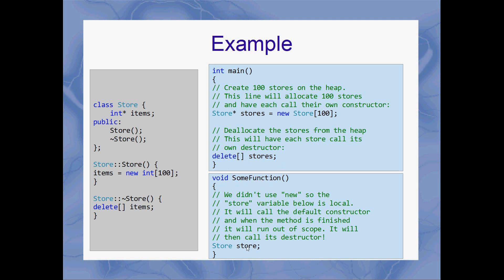So when I create this variable, it's going to jump to the constructor and create 100 integers on the heap for this local variable. But as soon as the function ends and it falls out of scope, it's going to automatically call the destructor and delete all of those items.